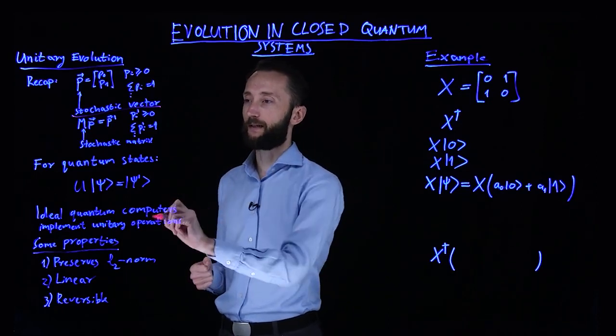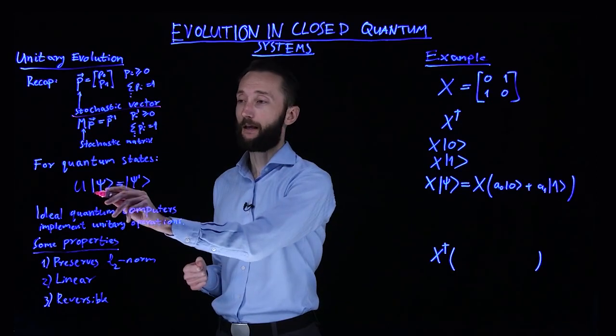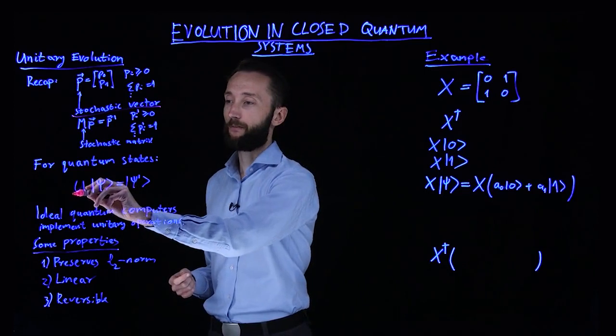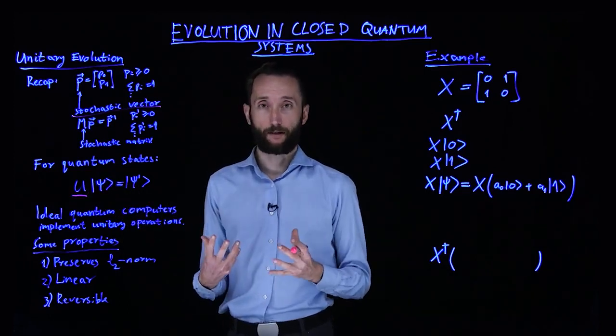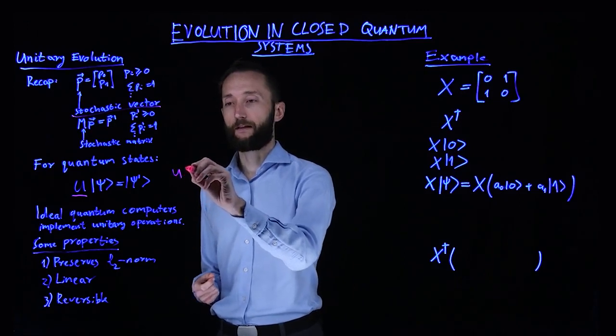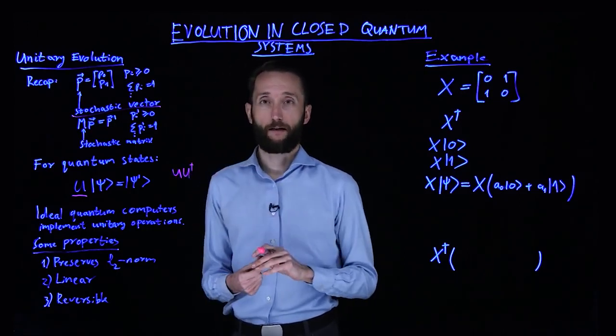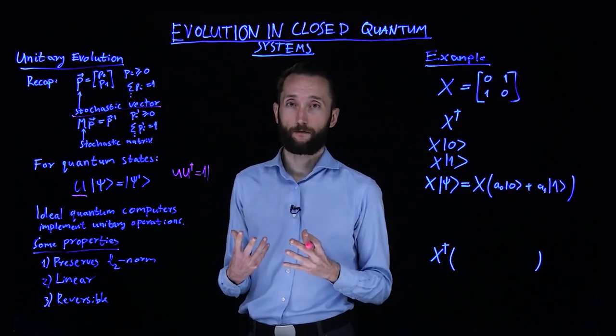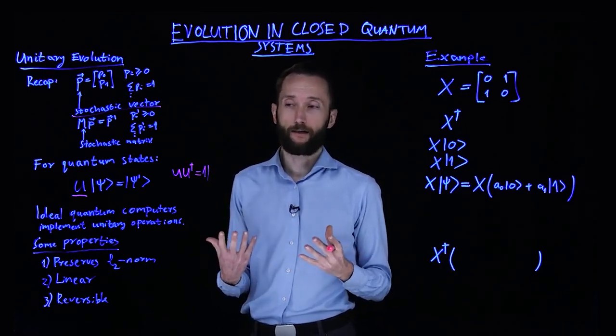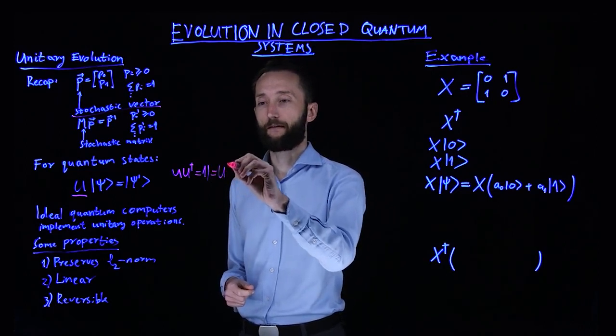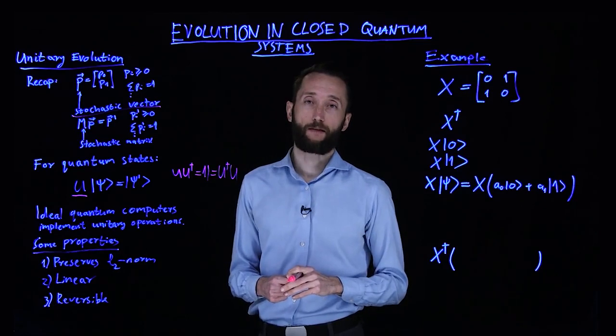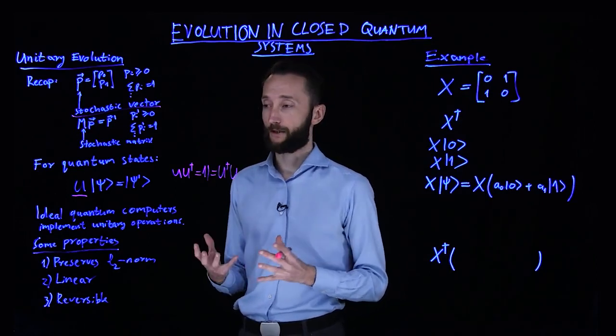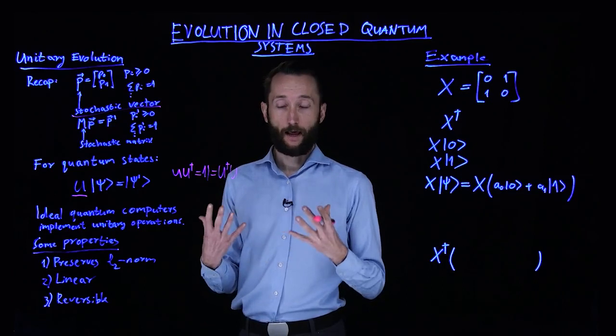So when it comes to quantum states, we want to apply some operation on the state and whatever we get, we want to be sure that this is still a quantum state. So the matrix that fulfills this condition has the property that it's unitary. Unitary means that if you apply its complex conjugate, you get the identity, which means that the complex conjugate of the matrix is its actual inverse. This is also true if you apply the complex conjugate first and then the matrix itself. That's all that the operation has to fulfill. And as I mentioned, this is the idealized computation that the quantum computer executes.